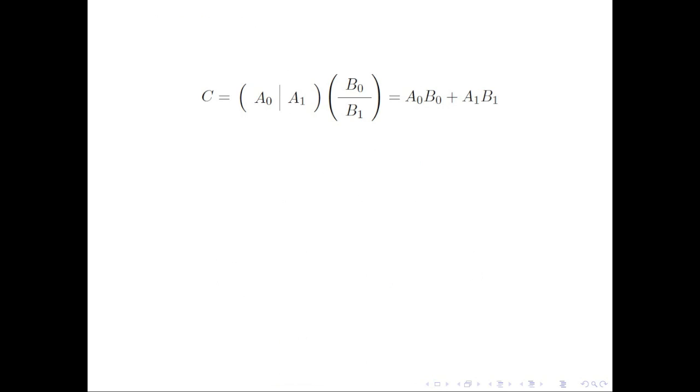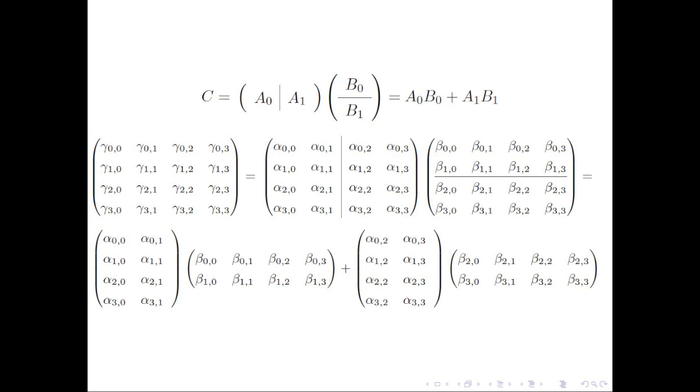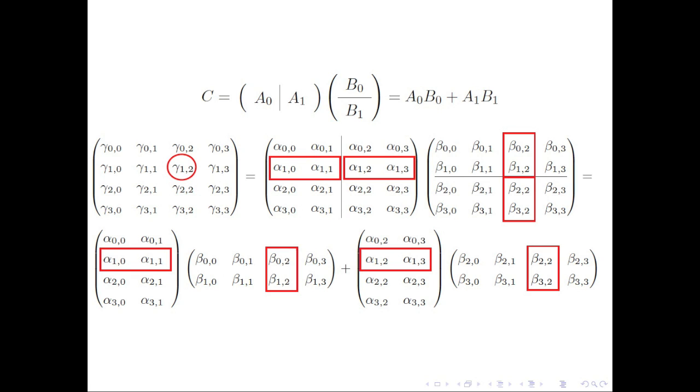Here is another example where we partition A vertically and B horizontally. This time, this results in a dot product with sub-matrices. Focus on the 1, 2 element. It is computed as the dot product of row 1 of A with column 2 of B. But we remember that the dot product of partitioned vectors is just the sum of the dot products of the sub-vectors.